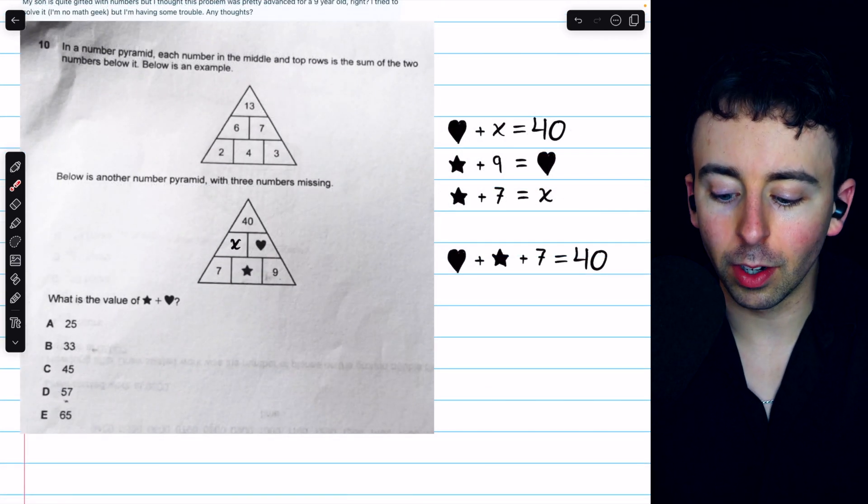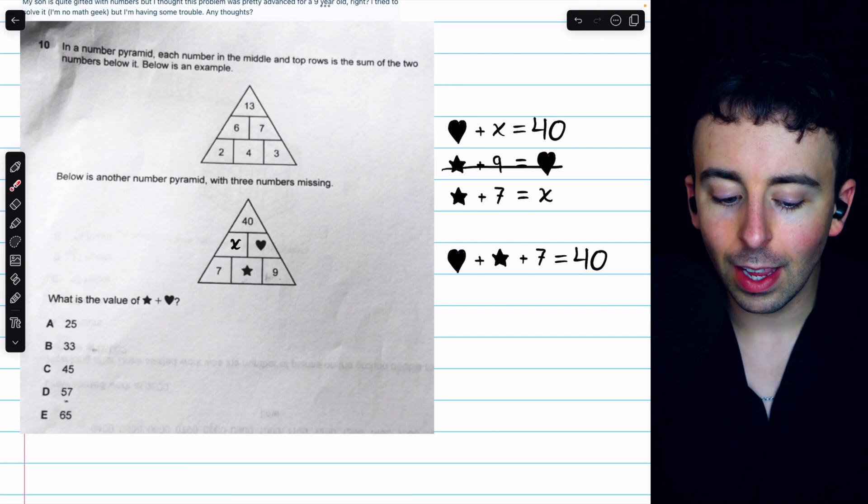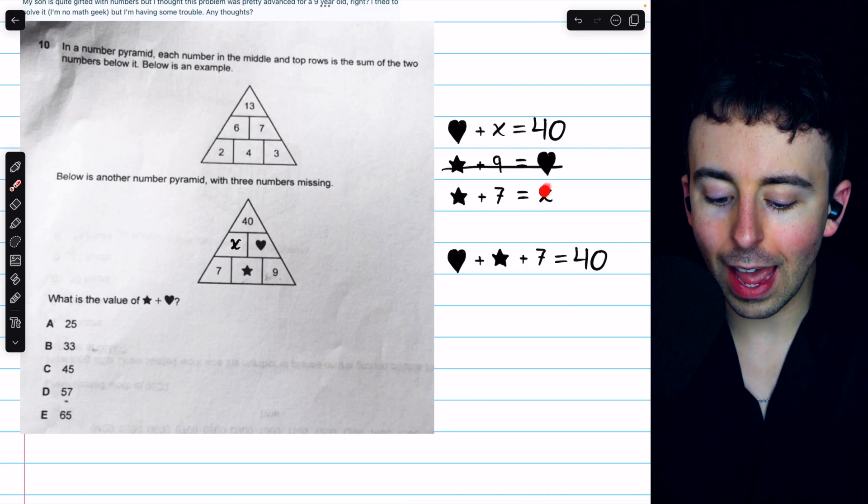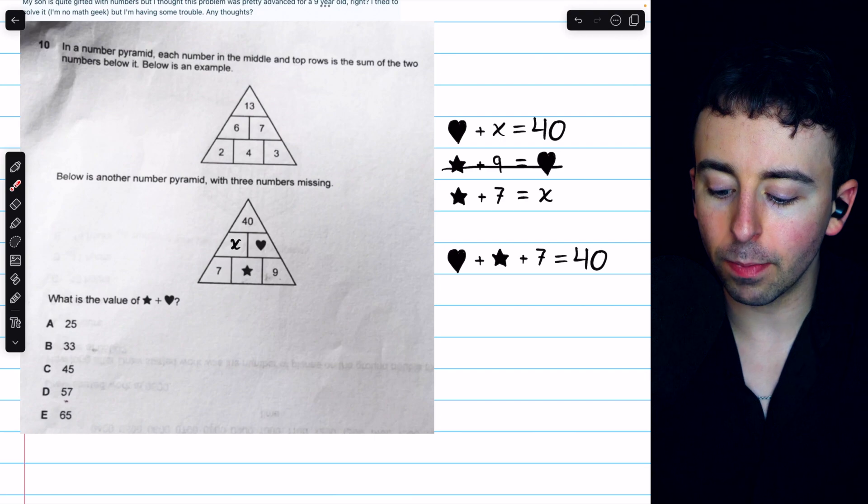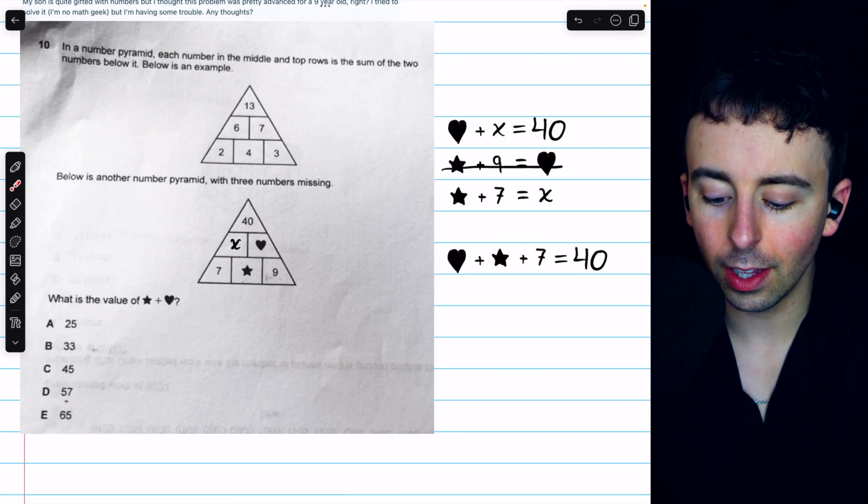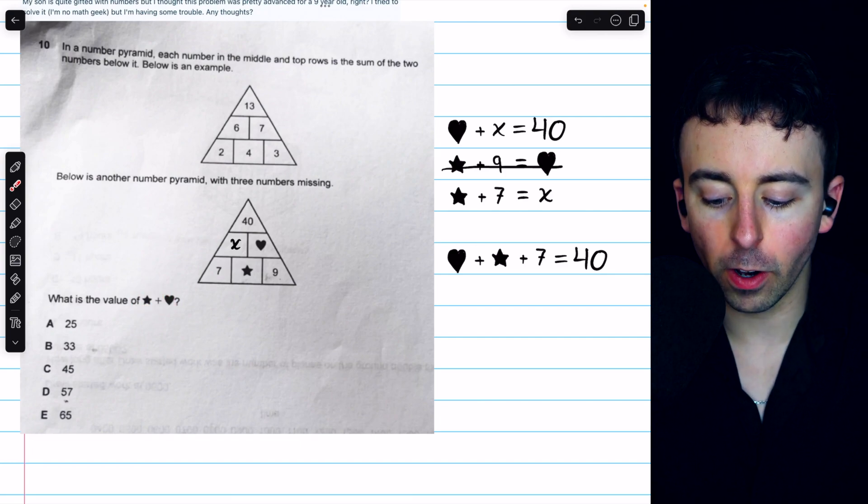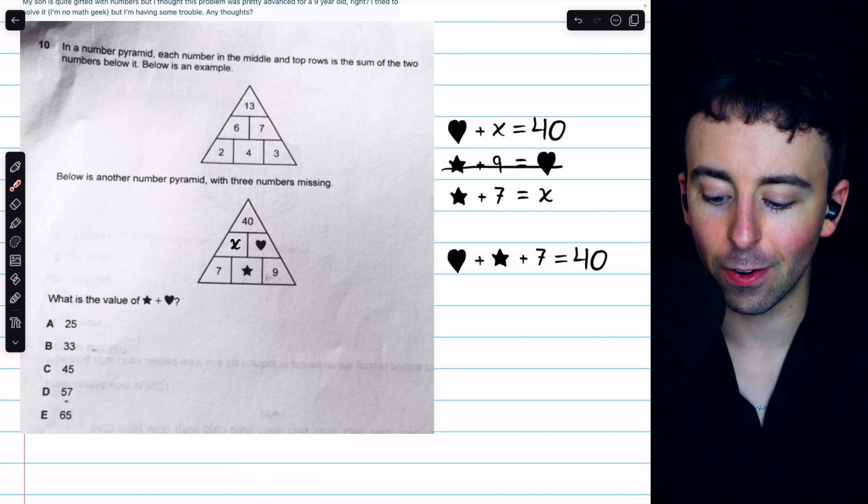Then this is extremely easy to finish solving. We actually don't even need this second equation. If heart plus x equals 40, but we know that x must equal 7 plus star, then it must be that heart plus 7 plus star is equal to 40. And remember, the quantity we're trying to solve for is heart plus star. Or star plus heart, but you know, it's addition, so the order doesn't matter.